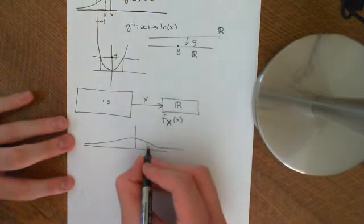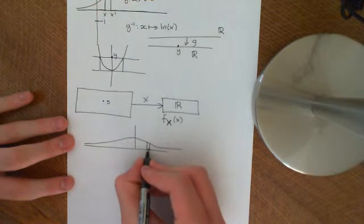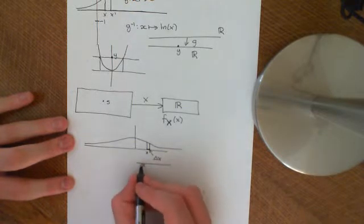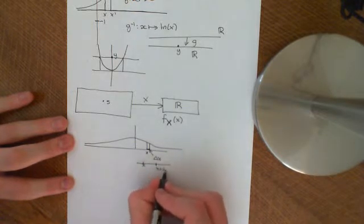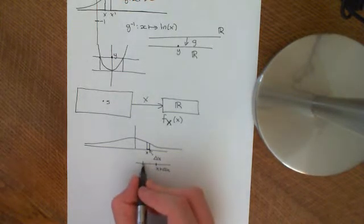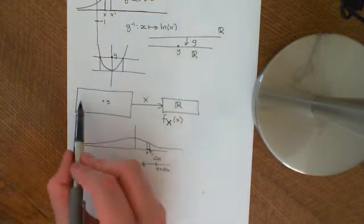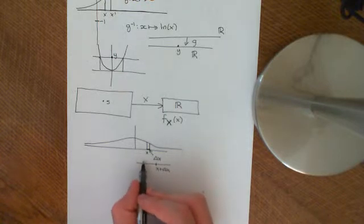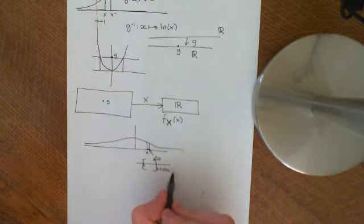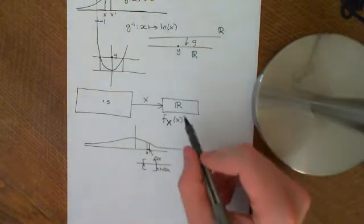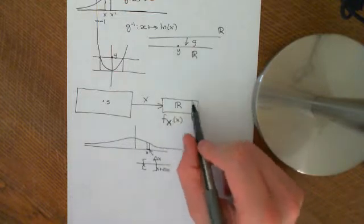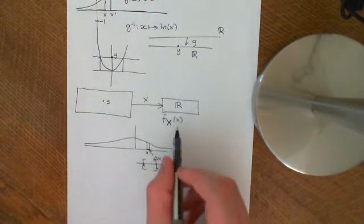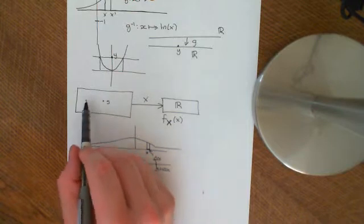What this number represents is: if you take a tiny interval of length delta x, going forward from x to x plus delta x, then the probability of the event that the outcome falls in that little interval — this little interval being a subset of the real line — is basically the probability of the corresponding event back in the abstract probability space. The probability of that interval inherits the probability space structure from the original space.